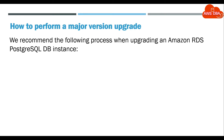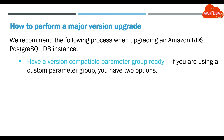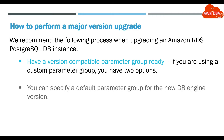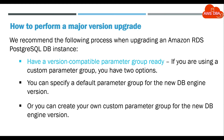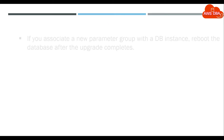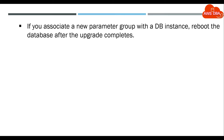We recommend the following process when upgrading an Amazon RDS PostgreSQL DB instance. Have a version-compatible parameter group ready. If you are using a custom parameter group, you have two options: you can specify a default parameter group for the new DB engine version, or you can create your own custom parameter group for the new DB engine version. If you associate a new parameter group with a DB instance, reboot the database after the upgrade completes.